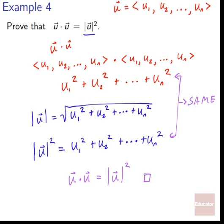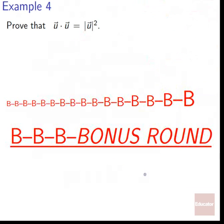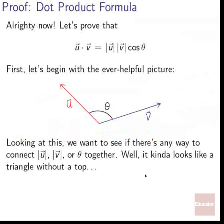Bonus round — the proof of the dot product formula. Let's prove that u dot v equals |u||v|cosθ. The first thing to do when thinking about anything analytically is draw a picture. We've got u and v with theta in between, and we want to see if there's any way to connect the length of u, the length of v, and theta together.